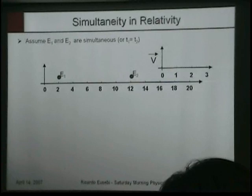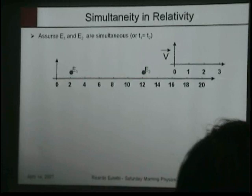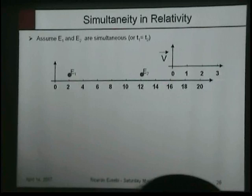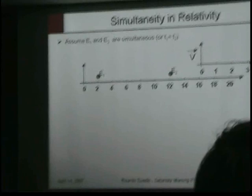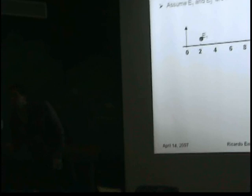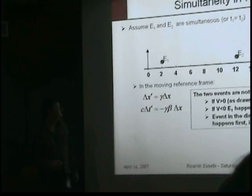So now, assume these two events are simultaneous in this reference frame, right? Simultaneous - happen at the same time. Two lights going off. The question is, does a person in this reference frame see this as simultaneous? No. Why not? Because they are at a different distance away. These two events are not seen as simultaneous.